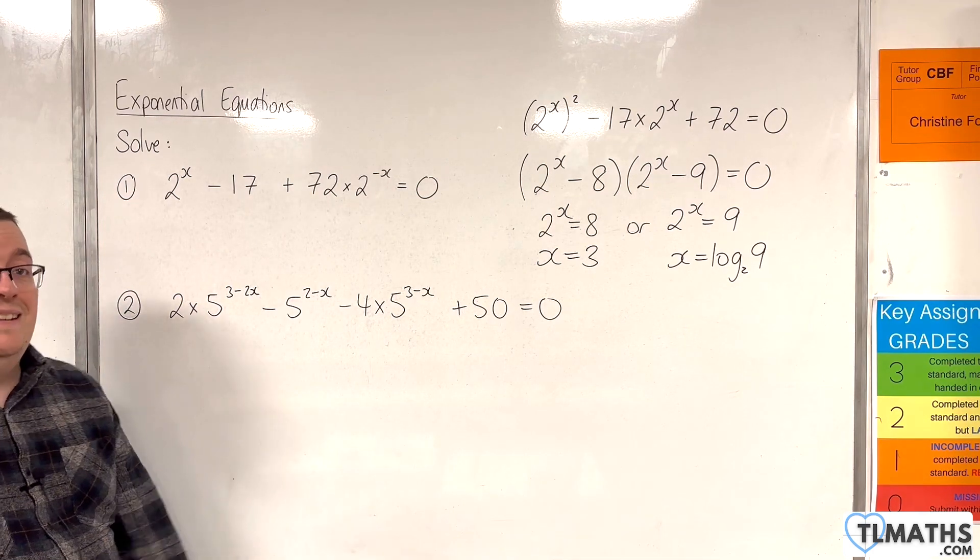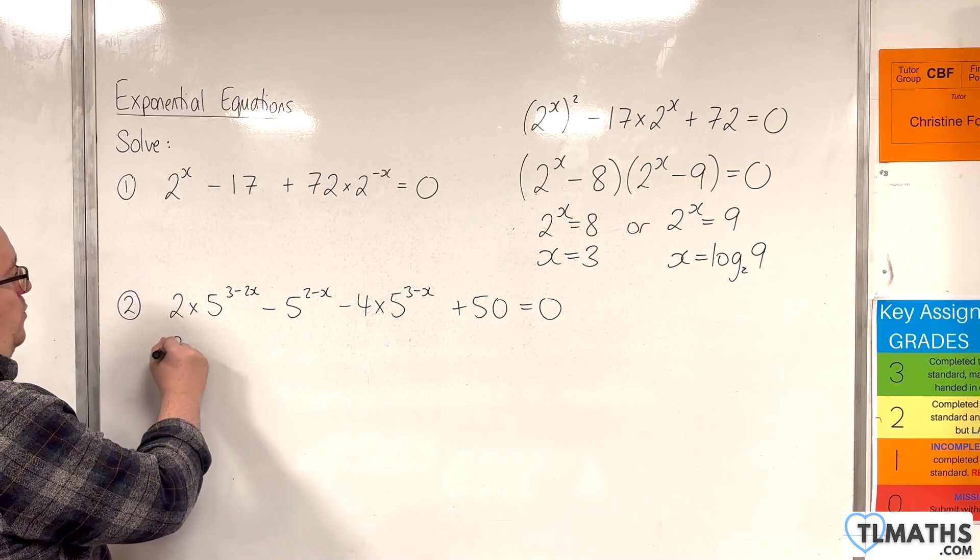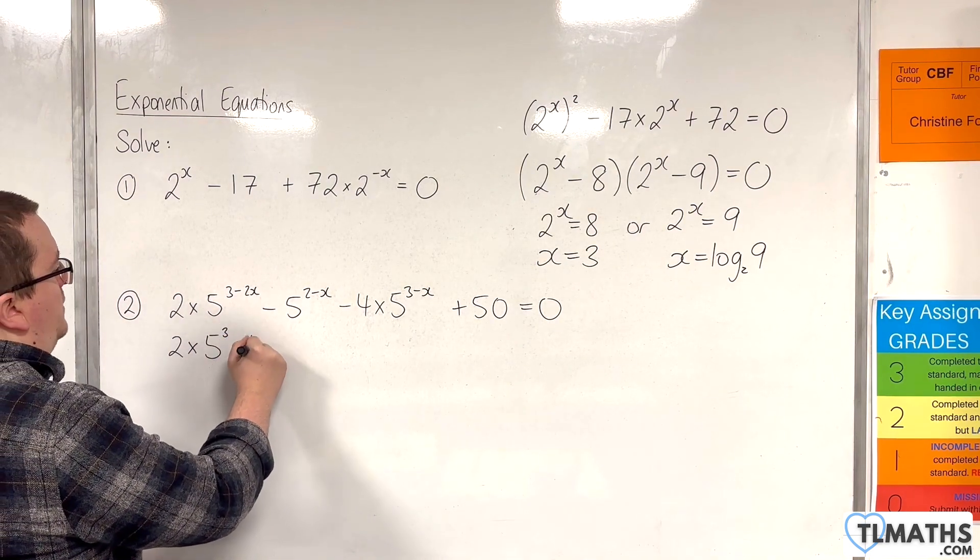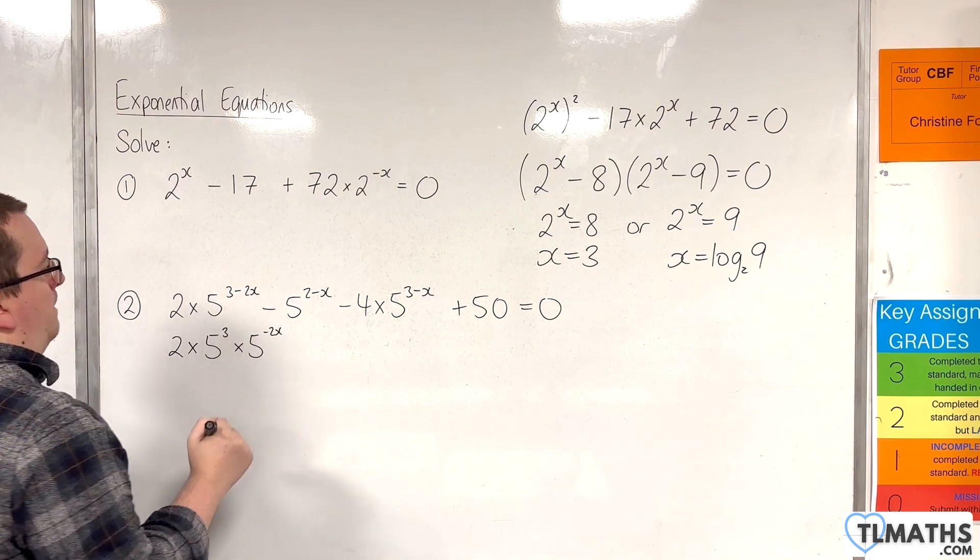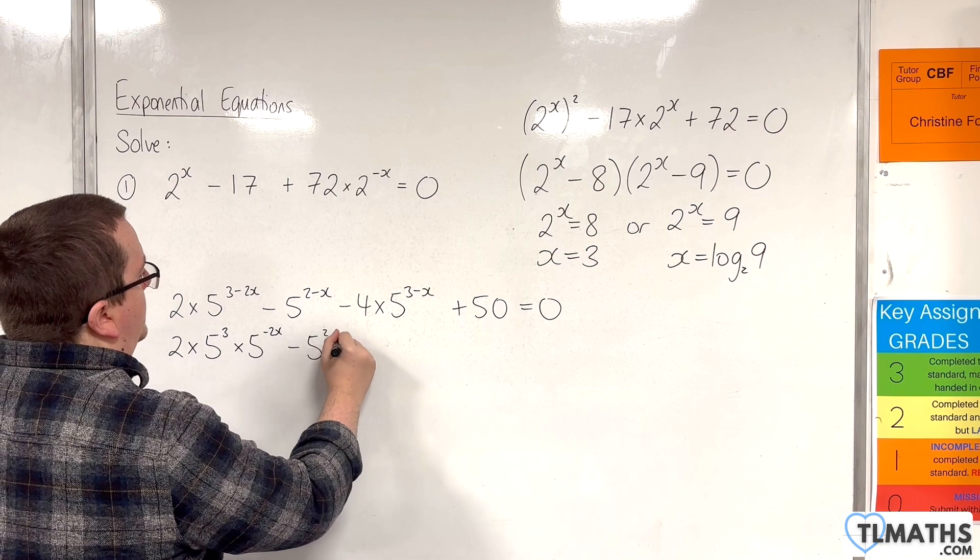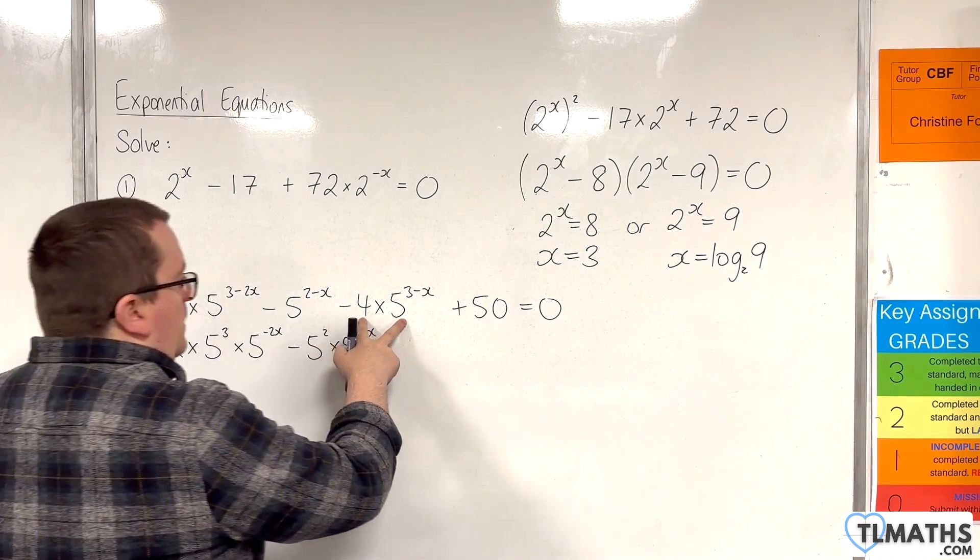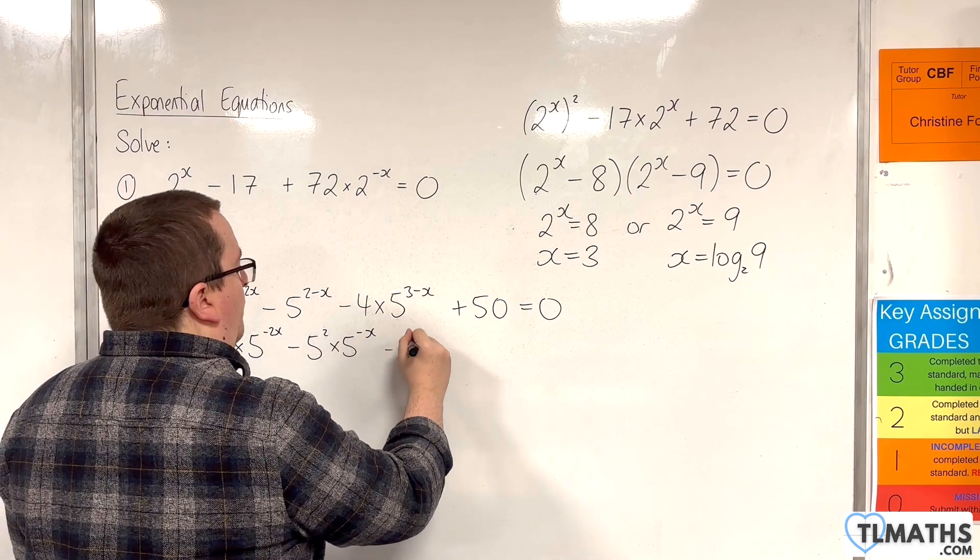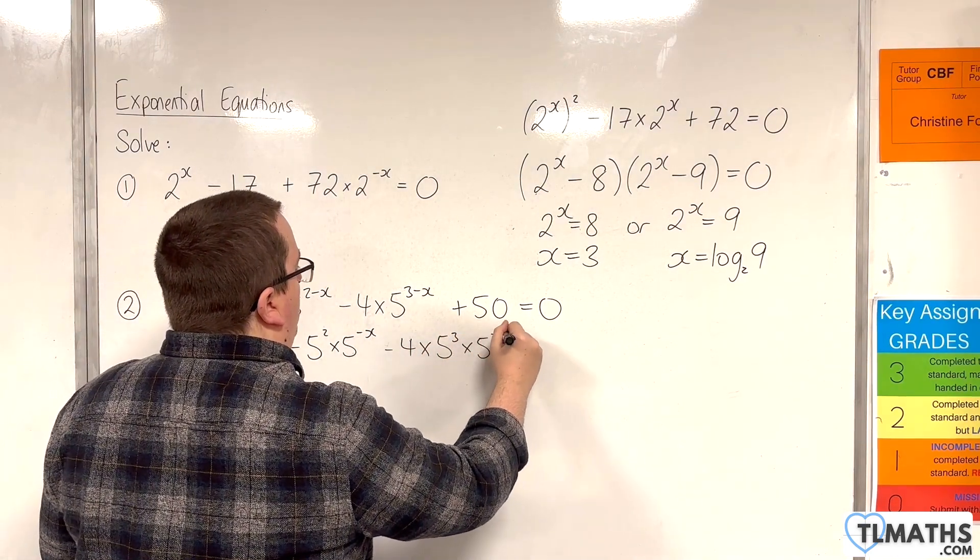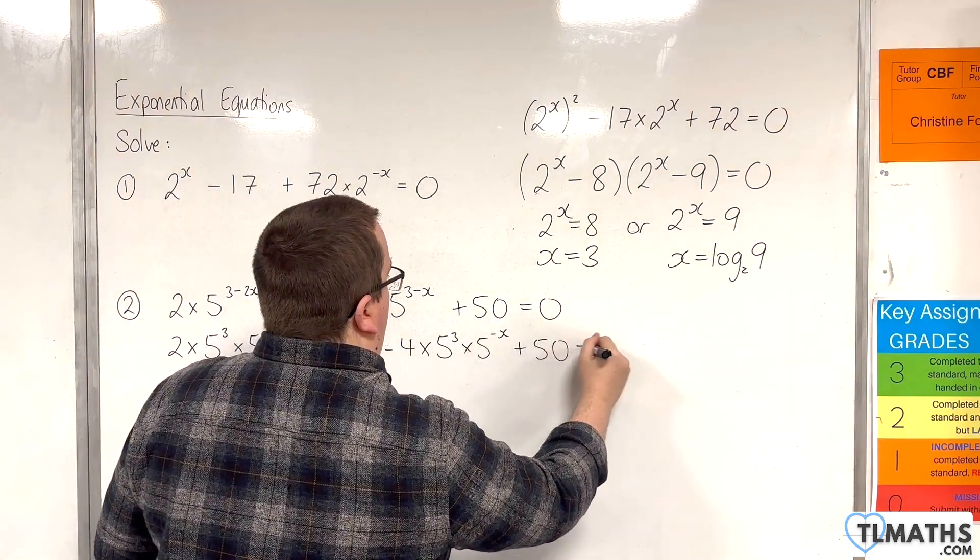So, let's work with the indices first. Now, here we've got 2·5³·5^(-2x). Then this term is take away 5²·5^(-x). Then this one, we've got take away 4·5³·5^(-x). And then we've got plus 50 on the end, equals 0.